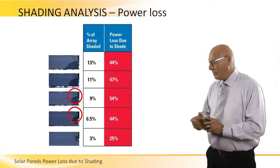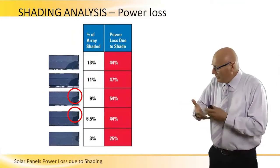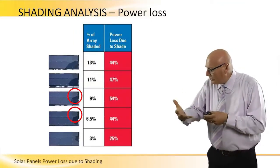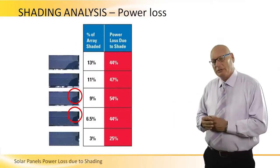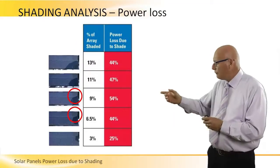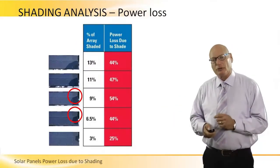In the last example, 6.5% of shadow spread over the entire width of the array causes 44% of power loss.